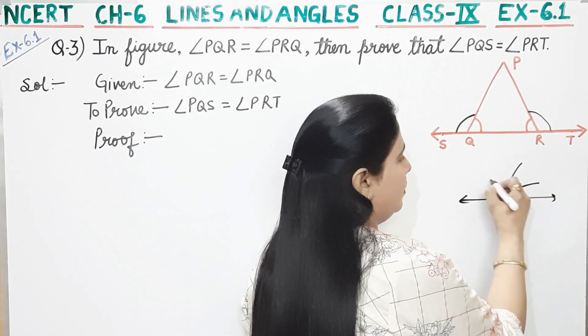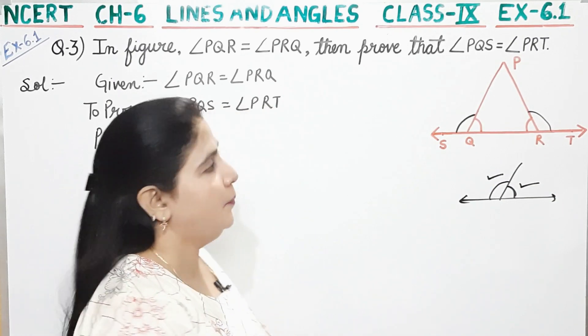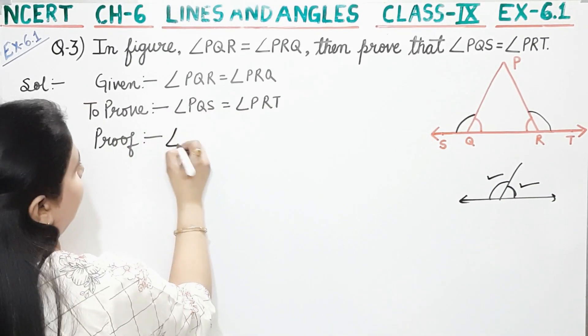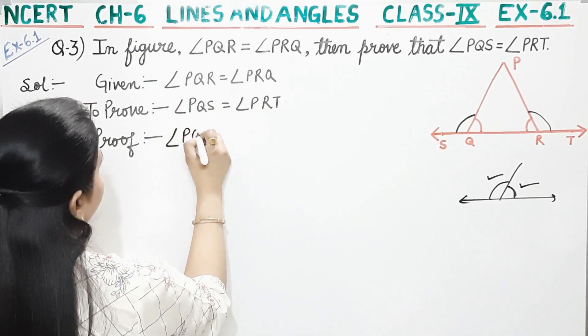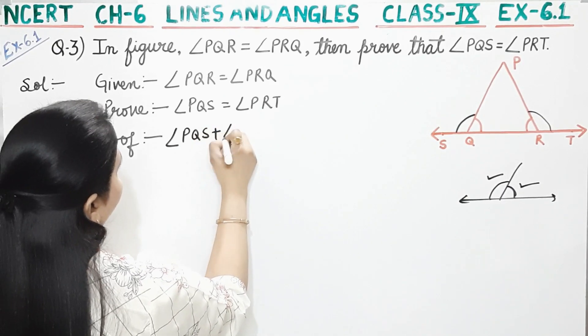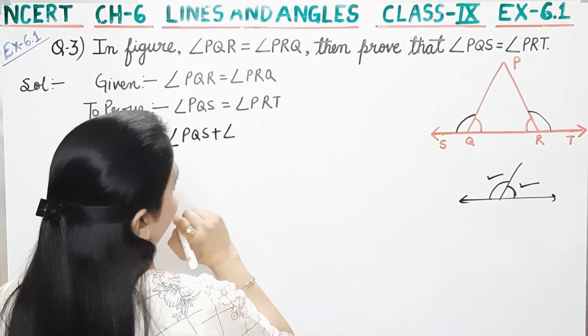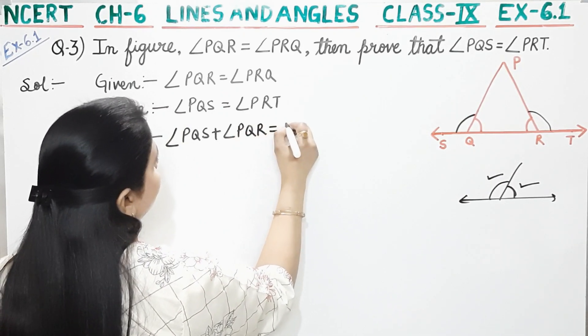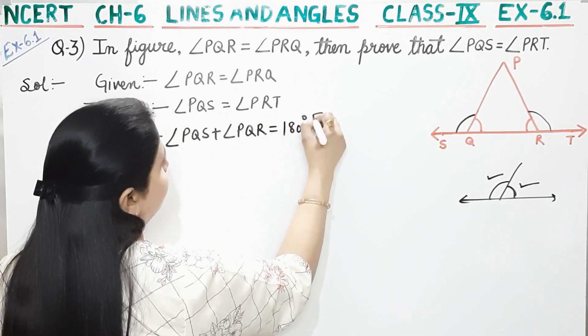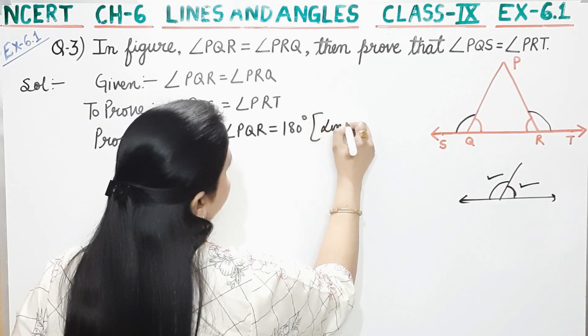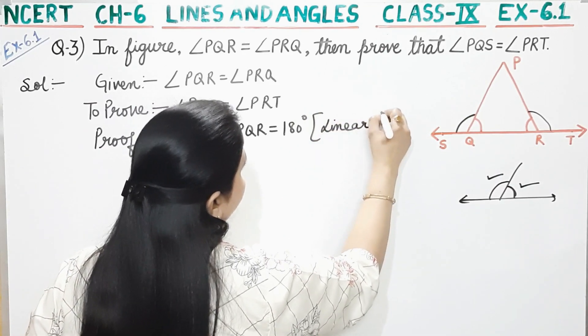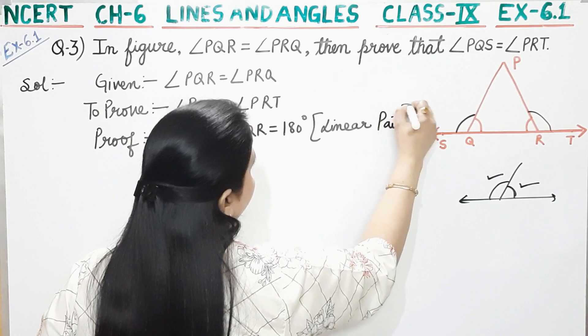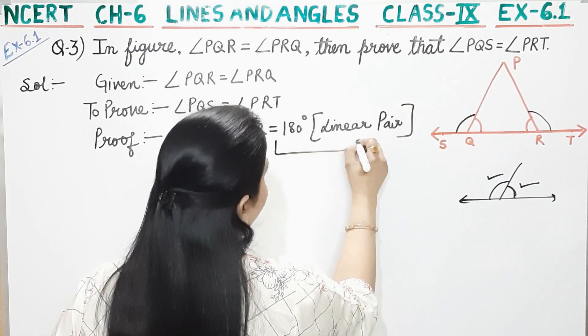This angle and this angle are both linear pairs. This angle is equal to 180 degrees. Reason: linear pairs. This is equation 1.